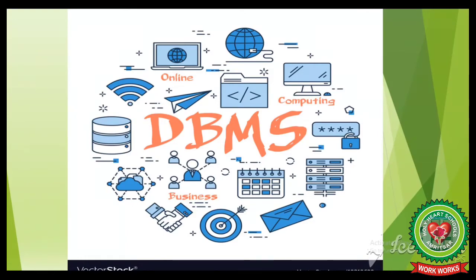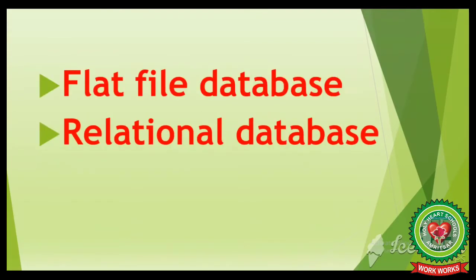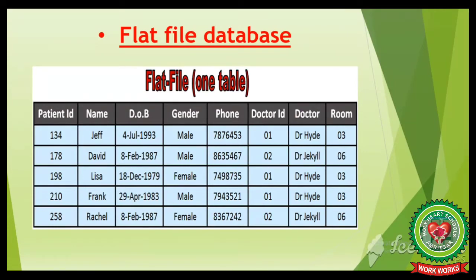Now, types of database. There are mainly two types: number one is flat file database, and number two is relational database. A flat file database refers to data files that contain records which have a small, fixed number of fields. As you can see in this picture, there is one table with a small and fixed number of fields, so it is a flat file database.